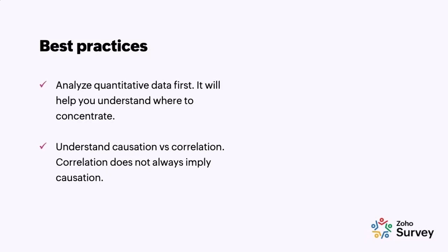Now for best practices. The first is to always analyze quantitative data first. For example, if a particular concierge — let's call him concierge Hari — has been consistently getting low ratings, I know something's not right. Then when I look at qualitative data, I'll go directly to what people have been saying about concierge Hari. This helps me understand where to concentrate my attention.